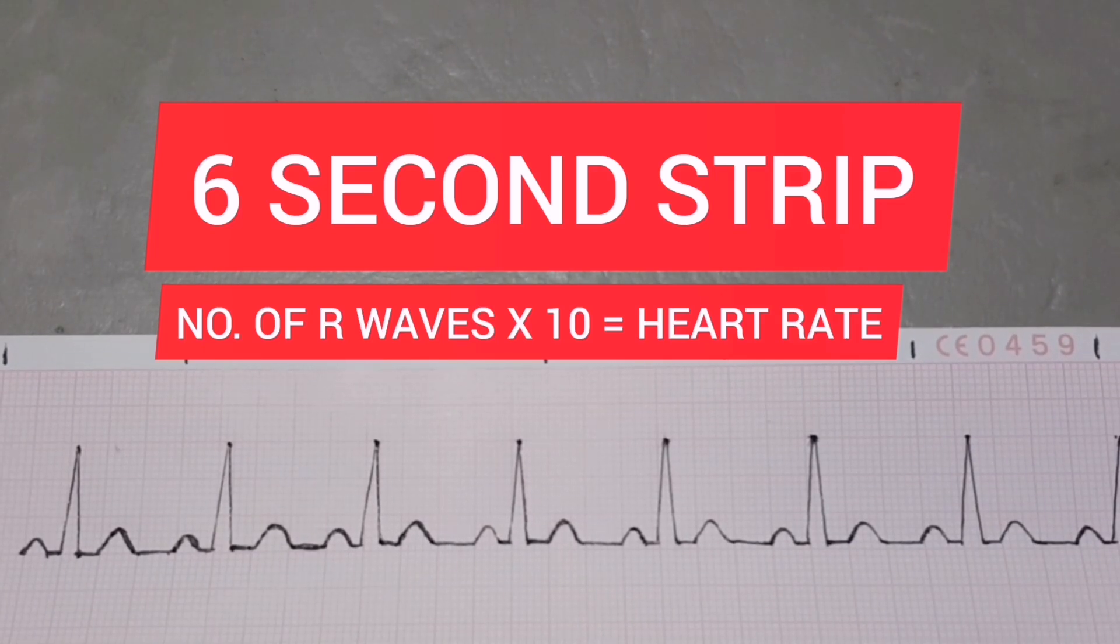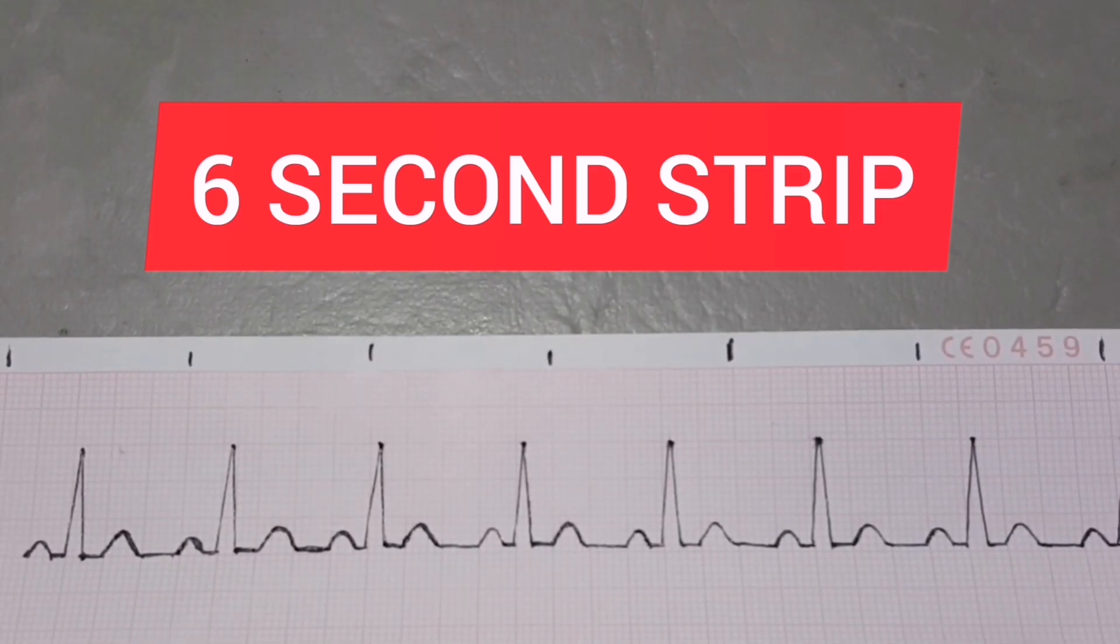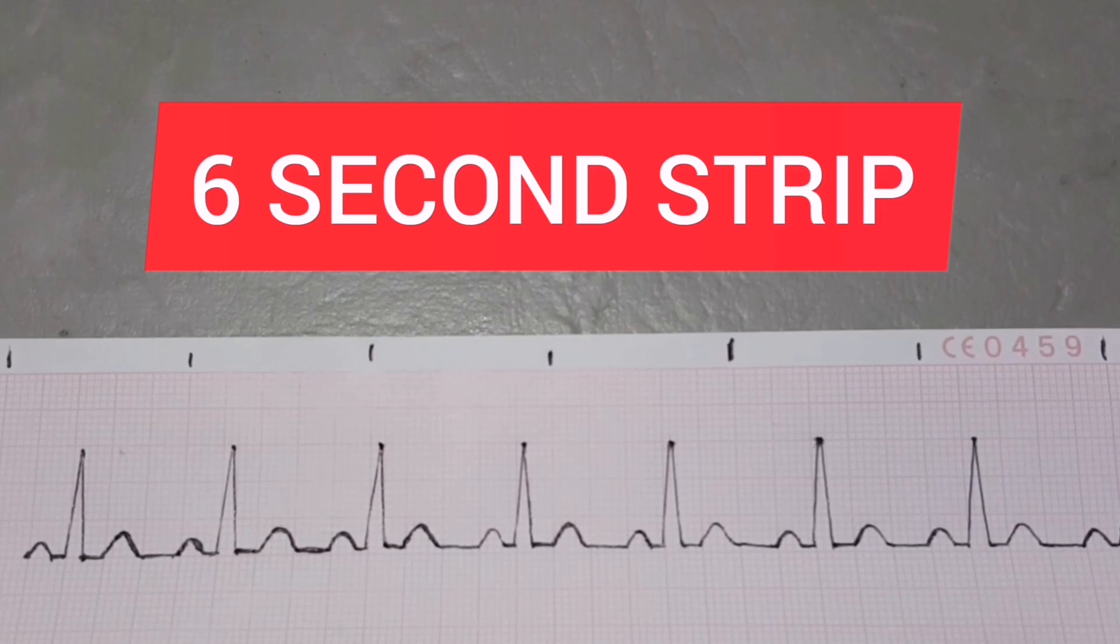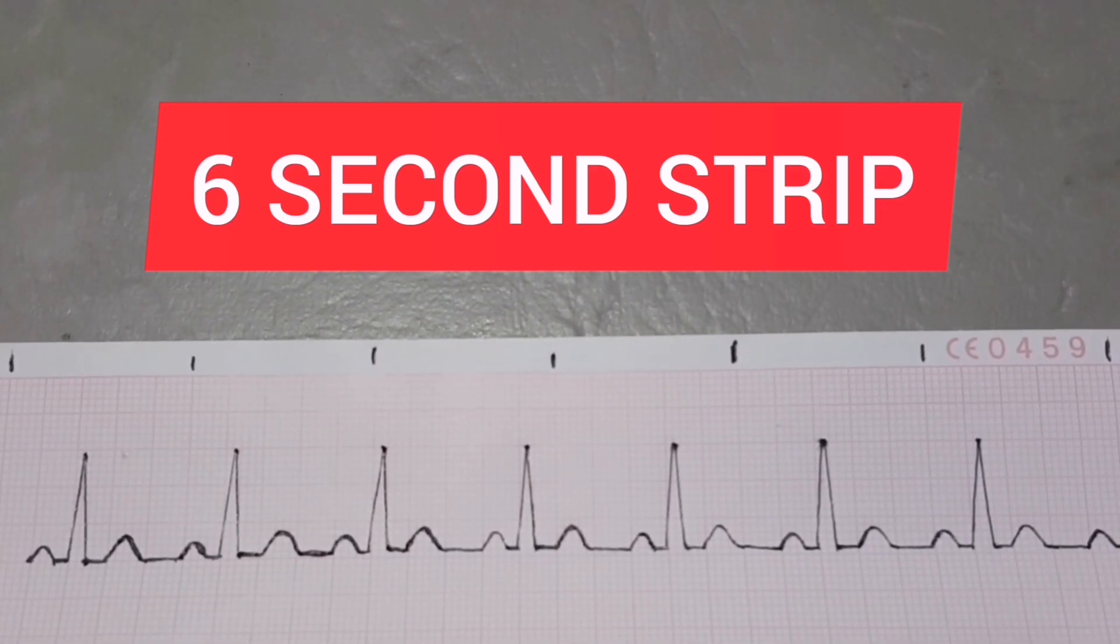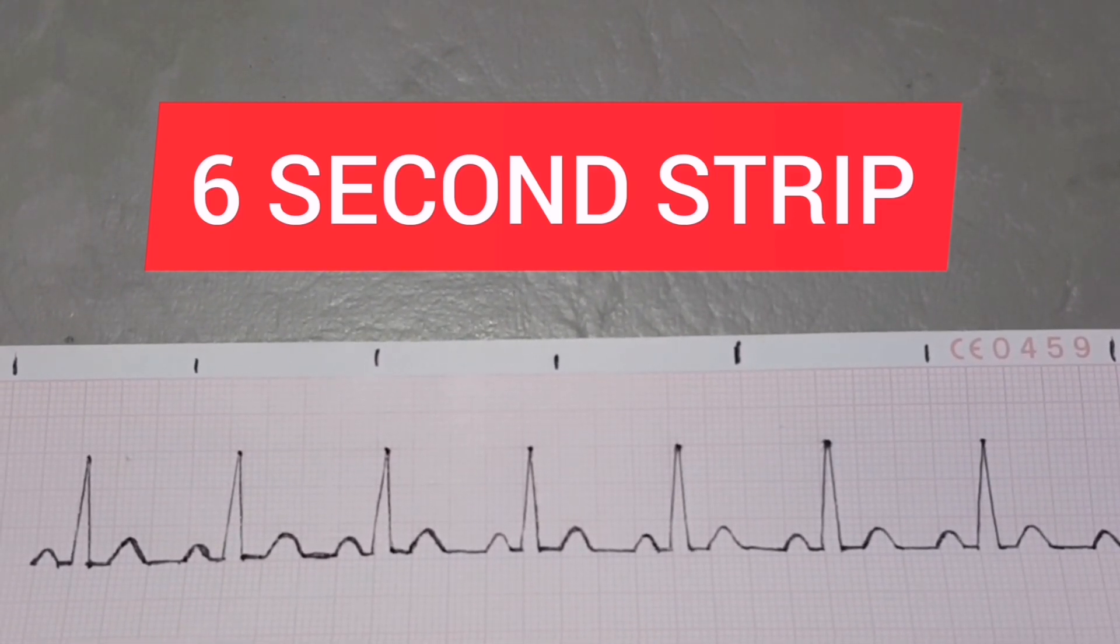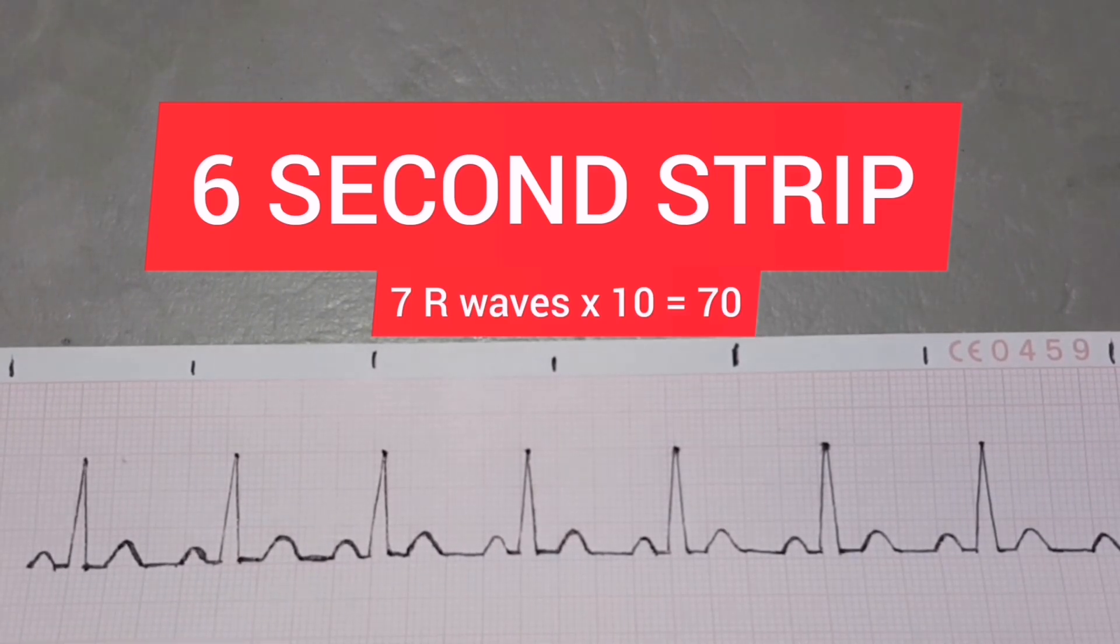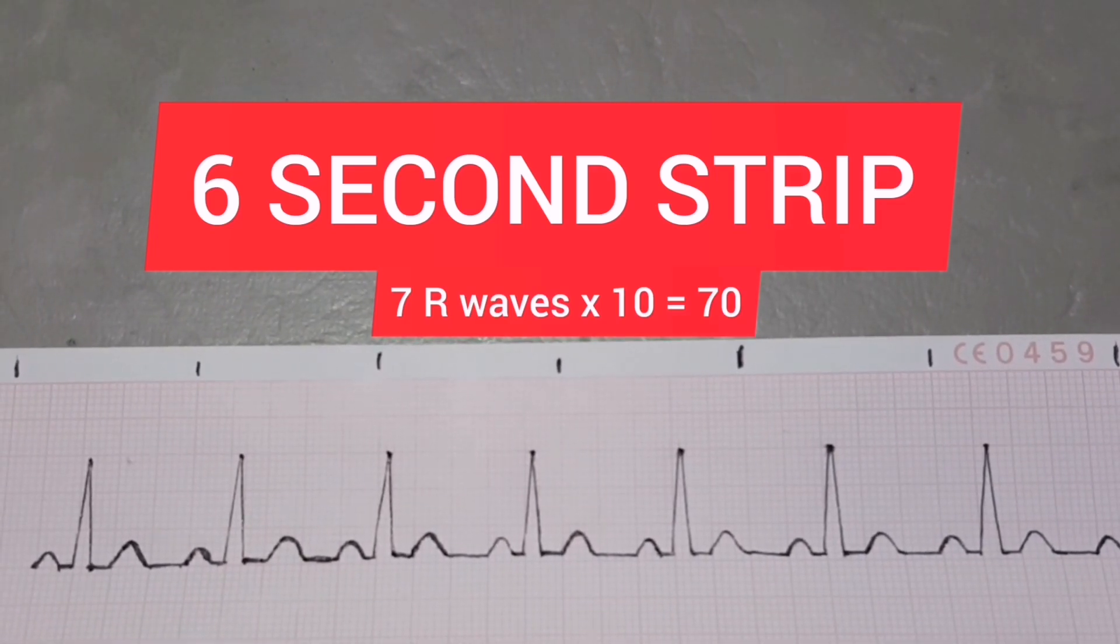Example, that strip is a six-second strip. And let's count the R-waves. 1, 2, 3, 4, 5, 6, 7. 7 times 10 is equal to 70. So heart rate is 70.